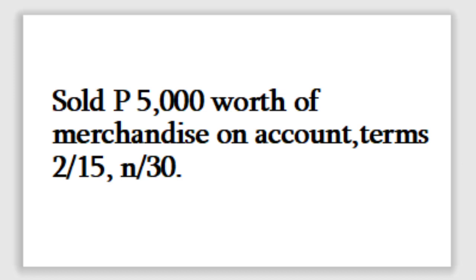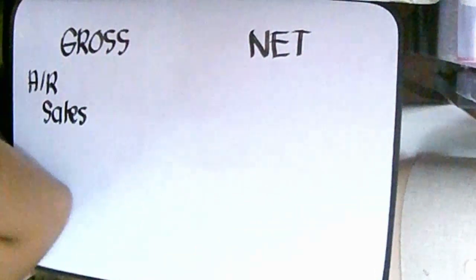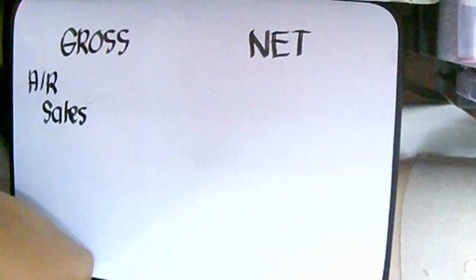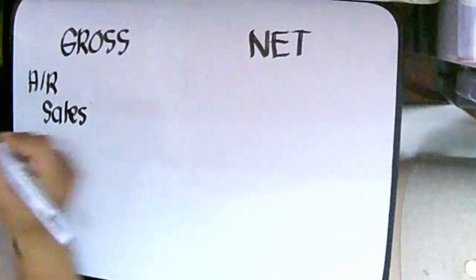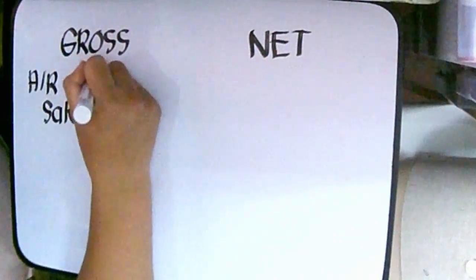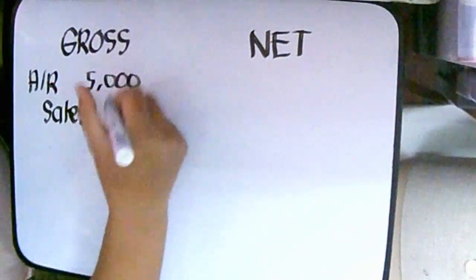So dito tayo sa ating example. Sold 5,000 worth of merchandise on account, terms 2/15, payable in 30 days. Our entry under the gross method would be a debit to accounts receivable and a credit to sales — gross amount is 5,000 pesos.